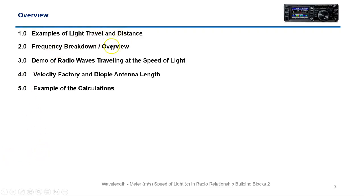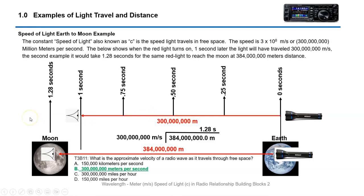Examples of light travel and distance, frequency and breakdown, demo of radio waves traveling at the speed of light, velocity factor and dipole length, and example of some calculations. The speed of light is how fast light travels in free space. The constant speed of light, also known as C, is the speed light travels in free space. The speed is 3 times 10 to the 8th, or 300 million meters per second.